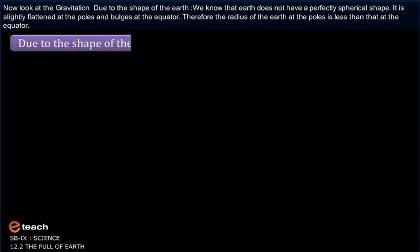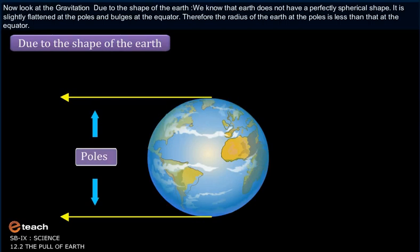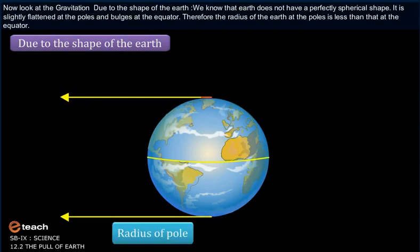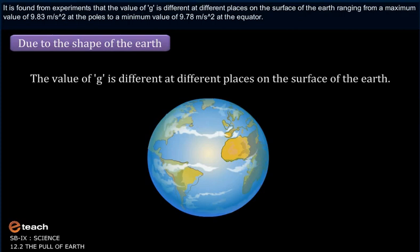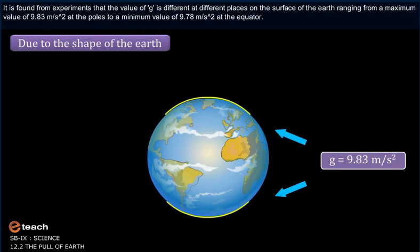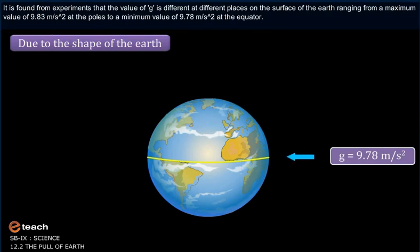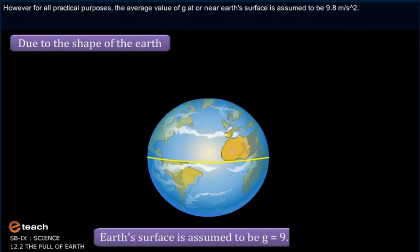The Earth does not have a perfectly spherical shape. It is slightly flattened at the poles and bulges at the equator. Therefore, the radius of the Earth at the poles is less than that at the equator. The value of g is different at different places on the surface of the Earth, ranging from a maximum of 9.83 m/s² at the poles to a minimum of 9.78 m/s² at the equator. However, for all practical purposes, the average value of g at or near Earth's surface is assumed to be 9.8 m/s².